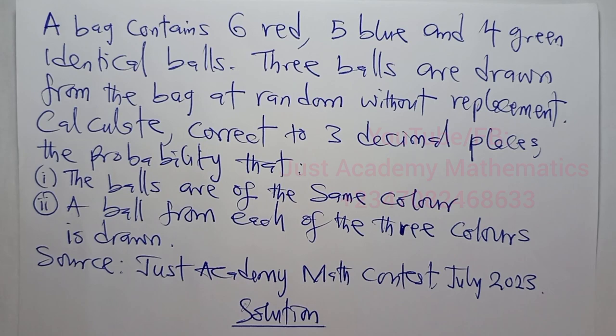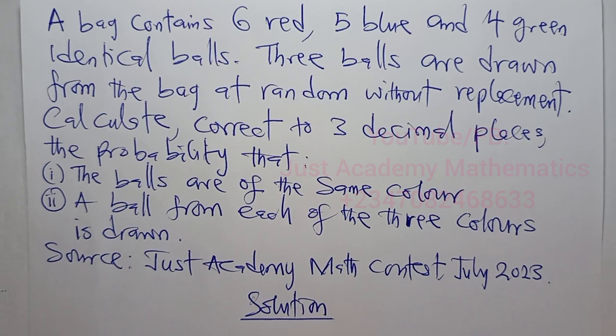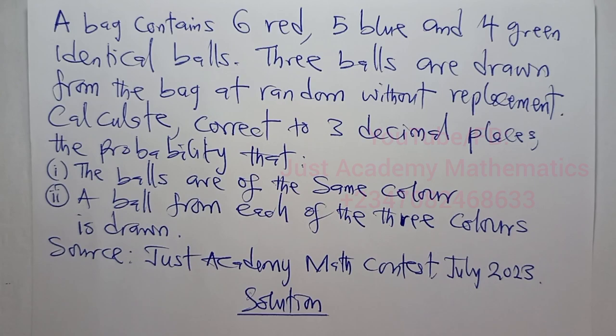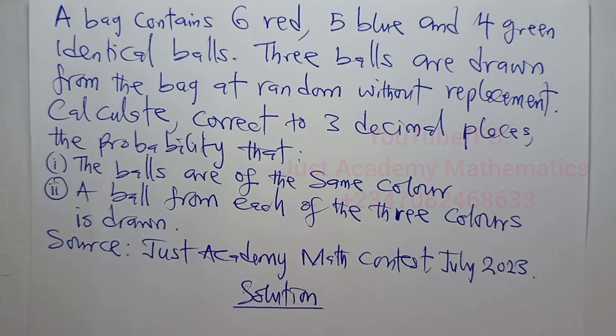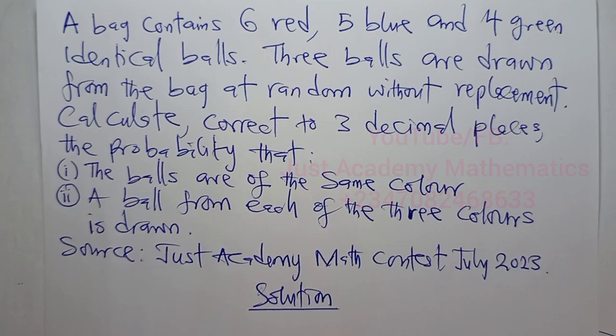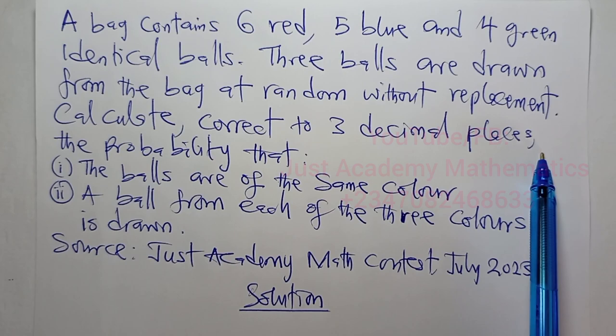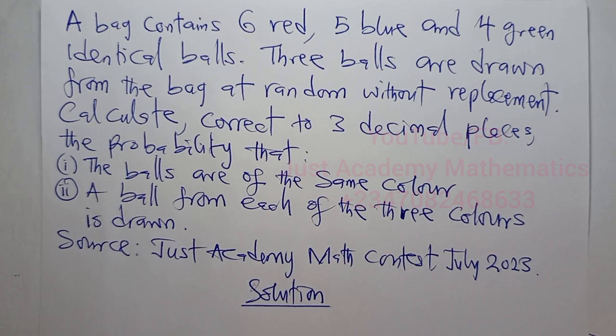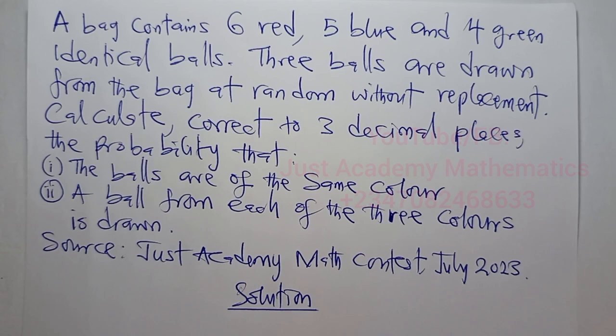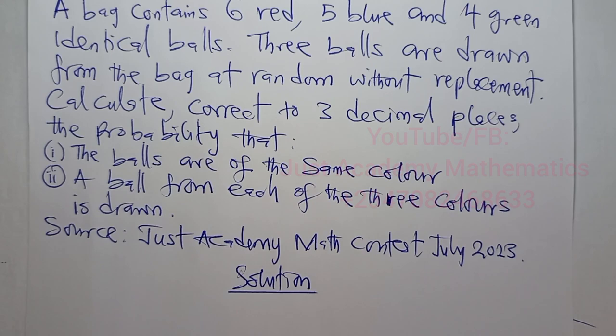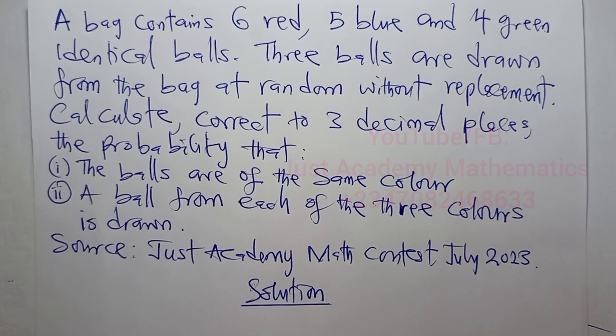Welcome back to Just Academy Mathematics YouTube channel, where we make you a mathematics genius. Today we have a question from statistics, specifically probability. The question says that a bag contains six red, five blue, and four green identical balls. Three balls are drawn from the bag at random without replacement — take note: without replacement. Calculate, correct to three decimal places, the probability that: (i) the balls are of the same color, and (ii) a ball from each of the three colors is drawn.